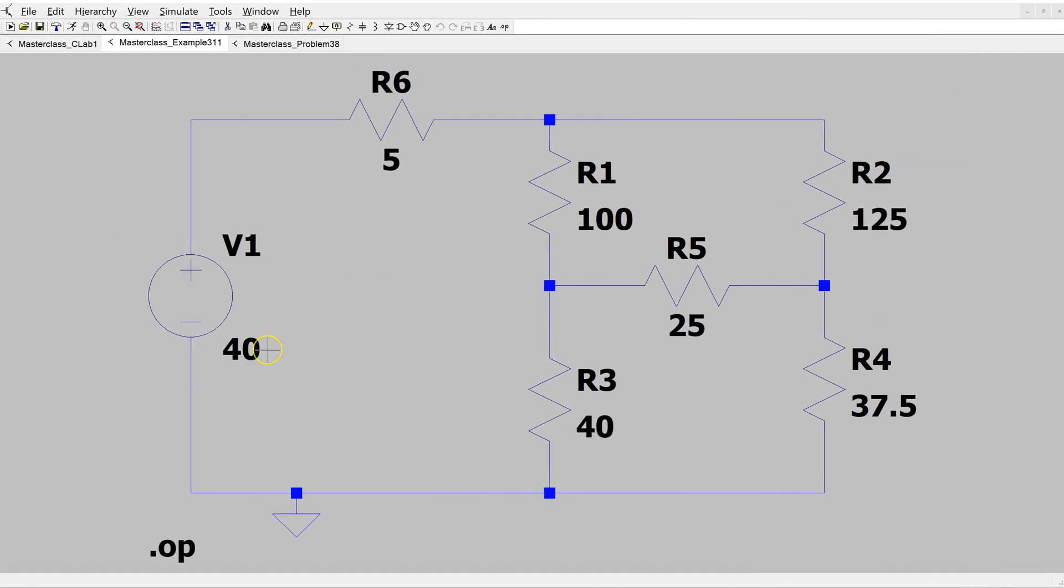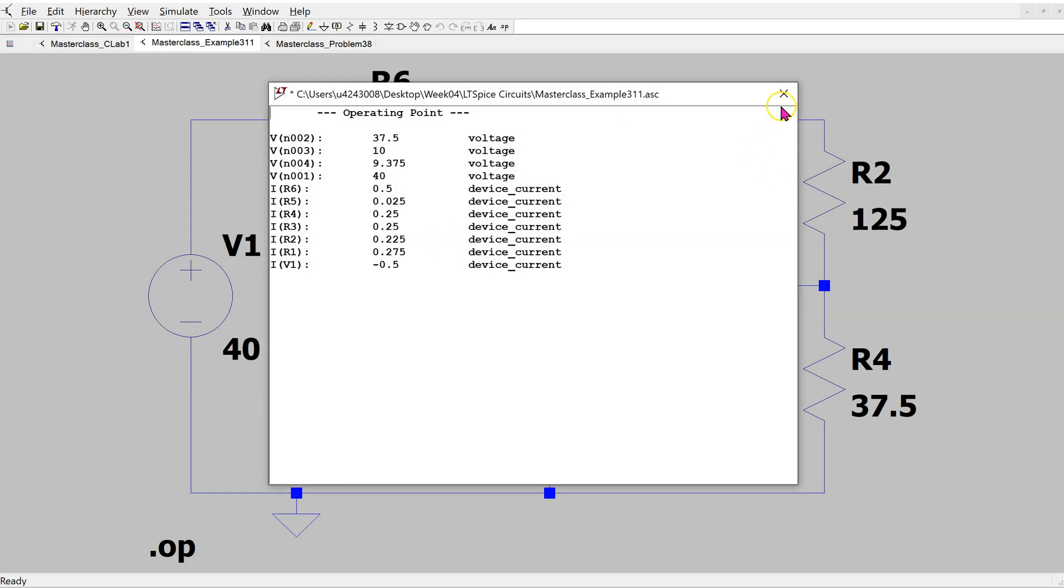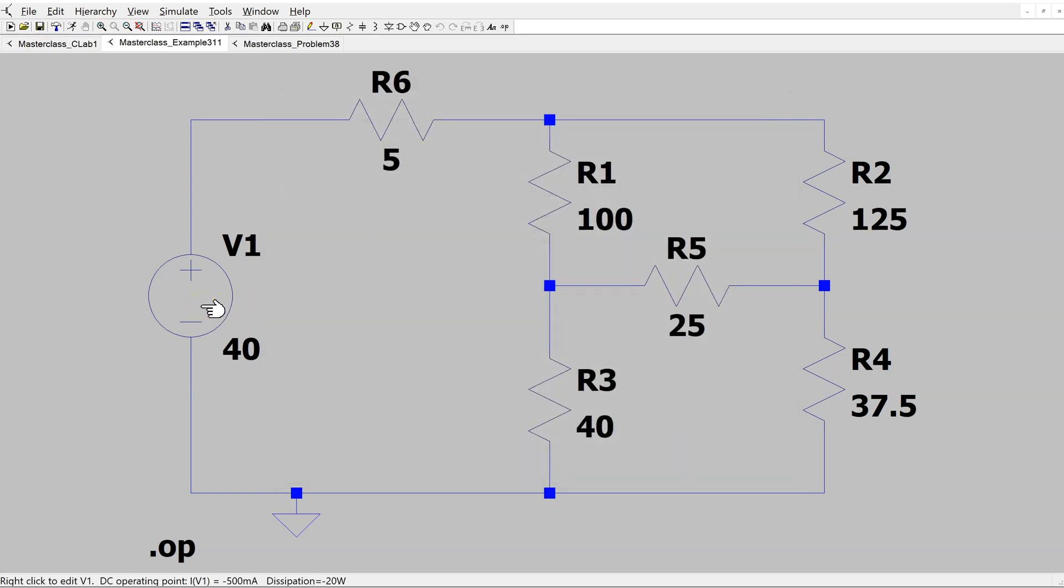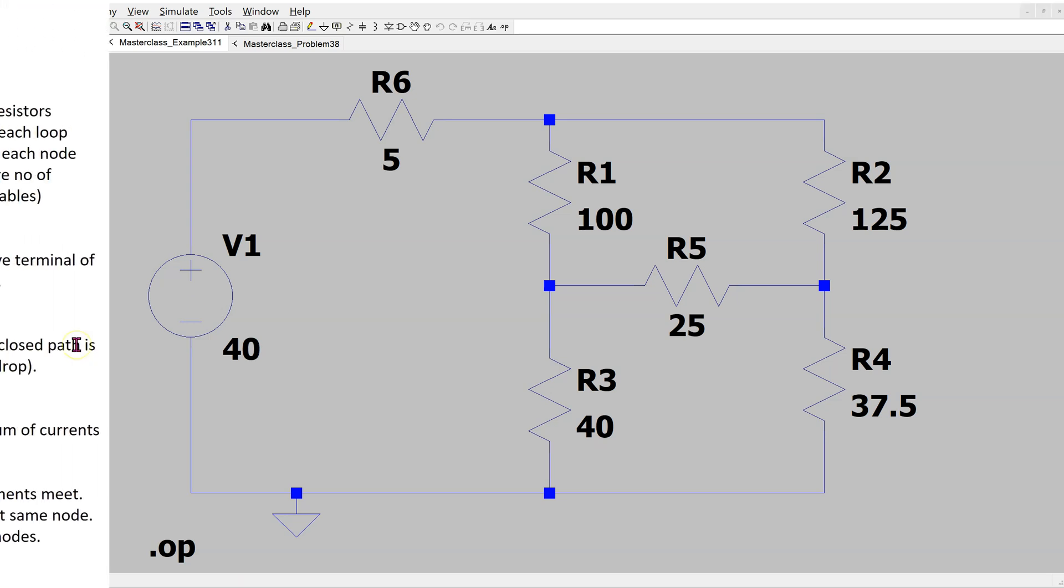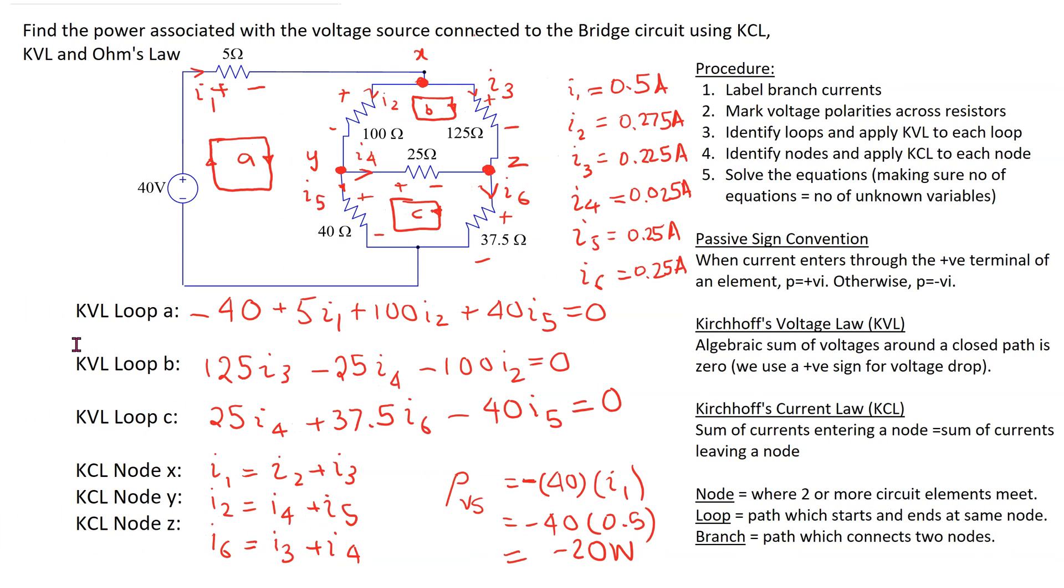We can verify the solution using LTSPICE. This is the bridge circuit constructed in LTSPICE. Note that in LTSPICE, it is not possible to rotate resistors at a 45 degree angle, thus this is the same bridge circuit but the resistors are placed horizontally or vertically. By running this simulation and bringing the cursor over the independent voltage source, we can see that the power dissipation is minus 20 watts, which confirms the solution.